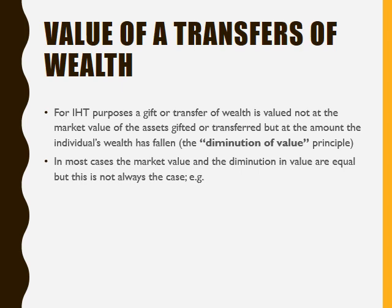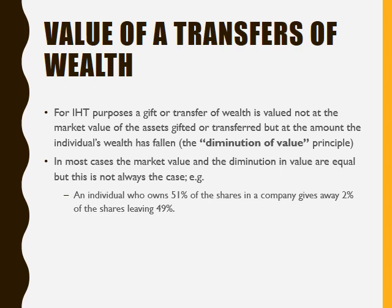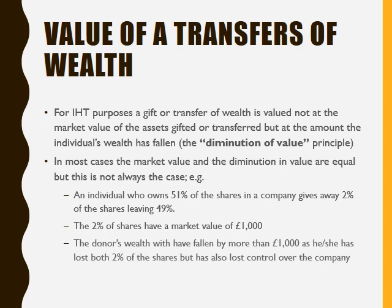We'll go through an example to illustrate this. If an individual owns 51% of the shares in a company and gives away 2%, leaving 49%, the value of those 2% of shares will be relatively low — let's say a market value of £1,000. But the fall in value of the donor's wealth will be significantly in excess of that £1,000, because previously they had control over that company, but now they don't. The fact that they have given away these shares and lost control over the business will have a value of more than £1,000, and it is this fall in value that is taken into account for inheritance tax.